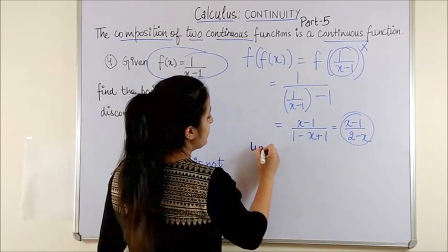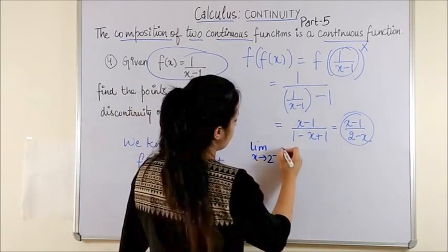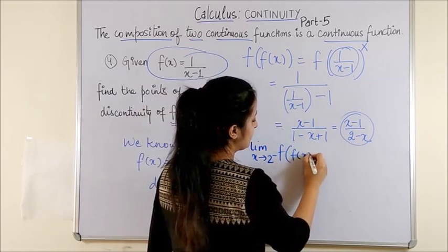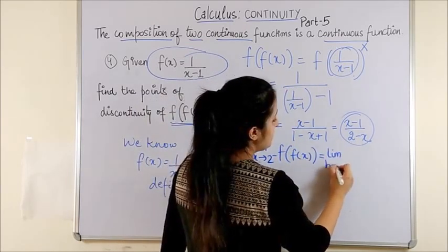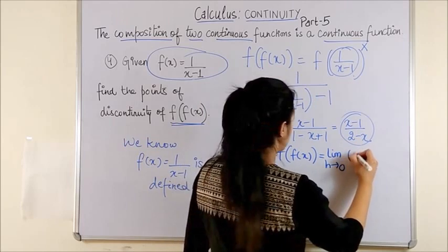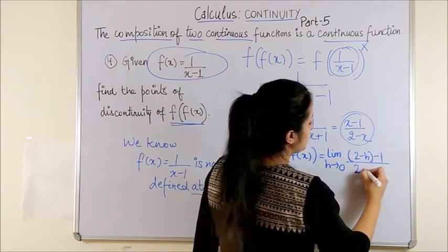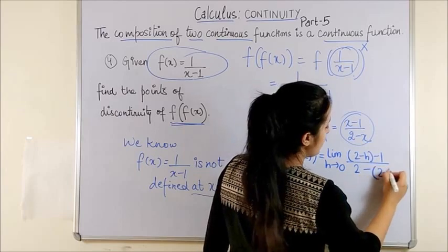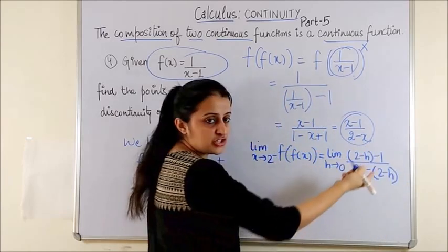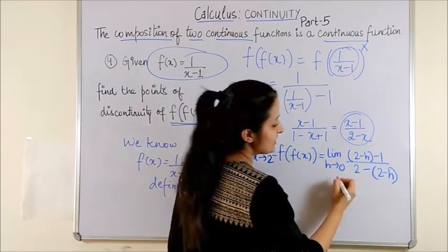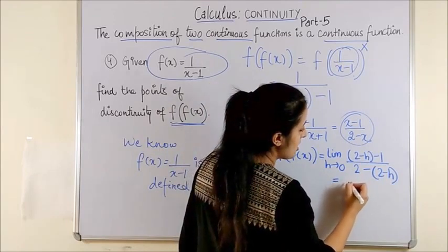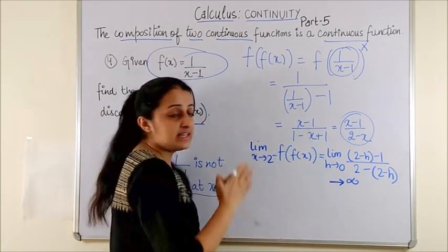you take limit x tending to 2 minus of f of fx which would be limit x tending to 0, 2 minus h minus 1 upon 2 minus 2 minus h. On substituting the value for h equals 0, you end up getting, this tends to infinity.